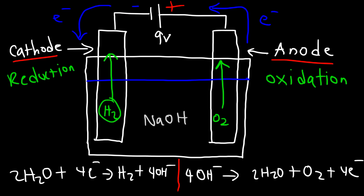If you add electricity to an aqueous solution of sodium hydroxide, you're going to get hydrogen gas at the cathode — which is the electrode attached to the negative terminal of the battery — and oxygen gas at the anode, which is the electrode attached to the positive terminal of the battery.